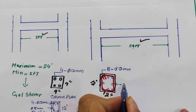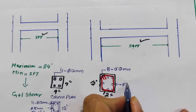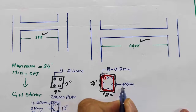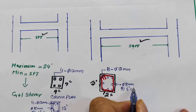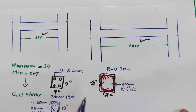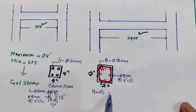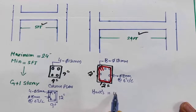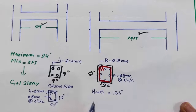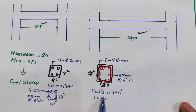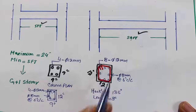For the lateral ties, the tie diameter should be eight millimeters with a spacing of six inches center to center. Hooks should be bent at 135 degrees and the hook length should be five inches, with three inches at this end.